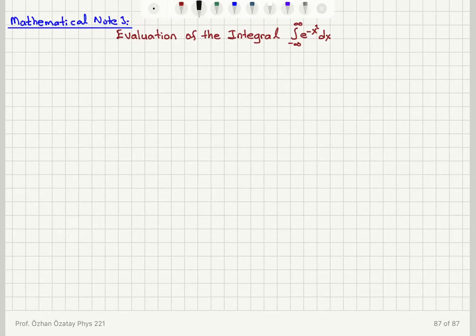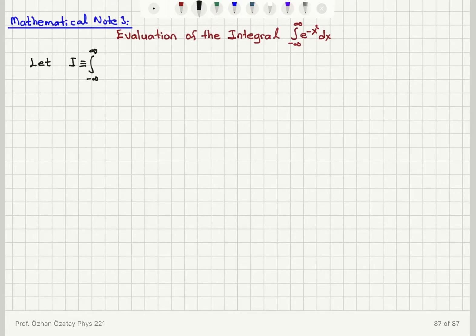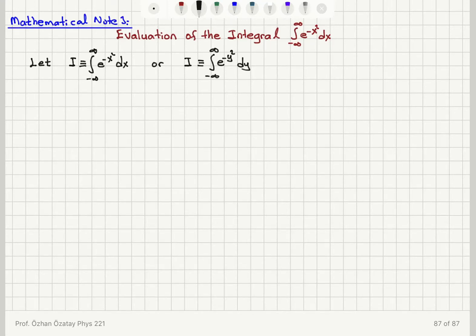We're now going to evaluate the integral of the Gaussian over the xy plane from minus infinity to plus infinity: the integral of e to the minus x squared dx. In order to evaluate this integral, we're going to call the answer I — that is the integral from minus infinity to plus infinity of e to the minus x squared dx. Notice that I could equally write this integral using y instead of x, as the integral from minus infinity to plus infinity of e to the minus y squared dy — they're the same thing. The trick is to find the square of this integral.